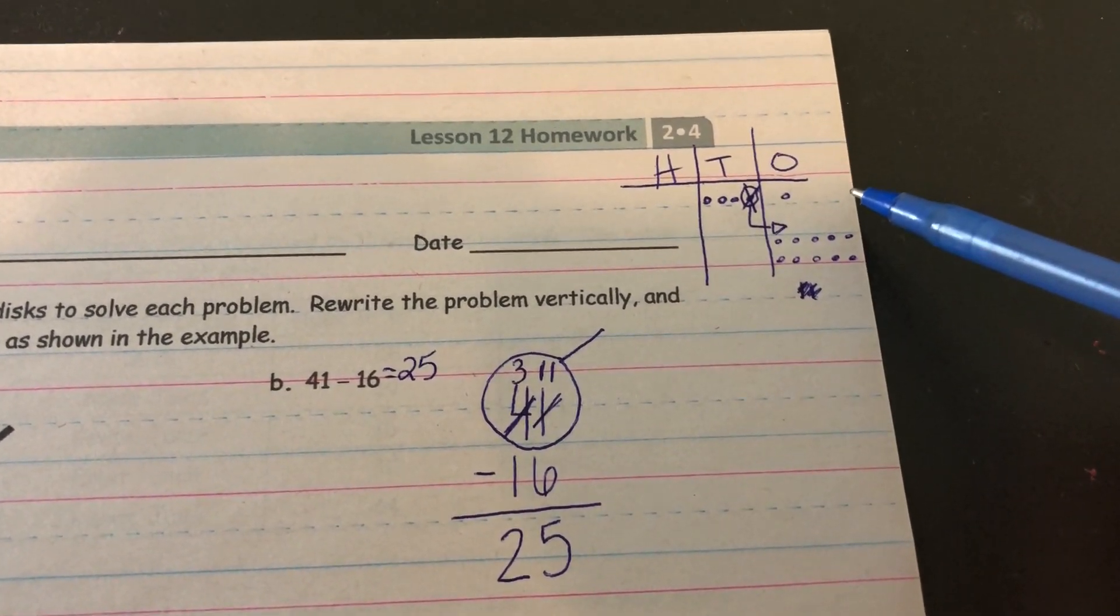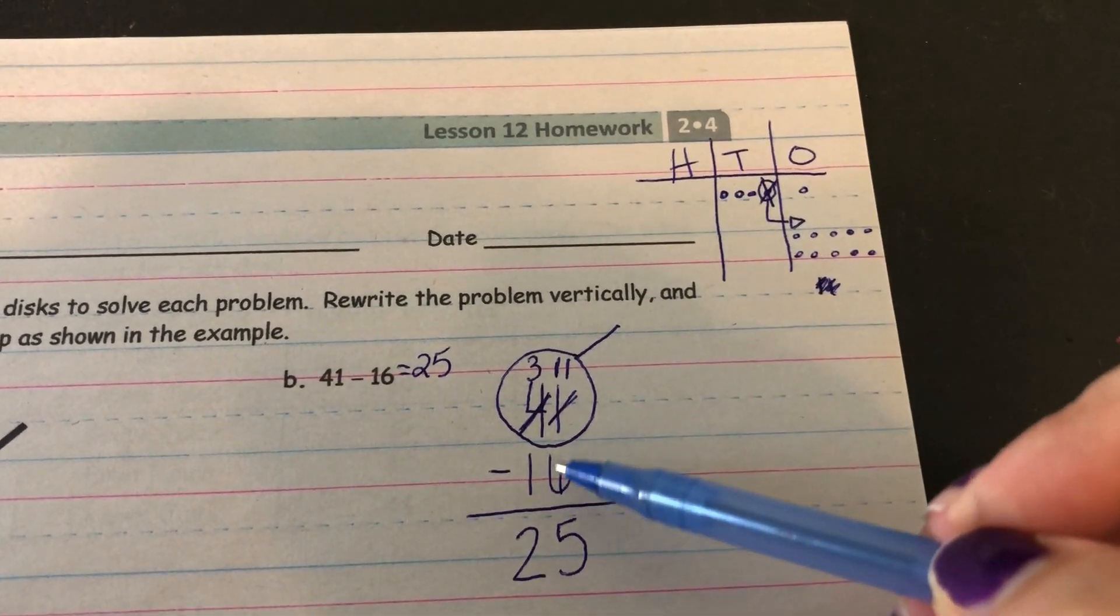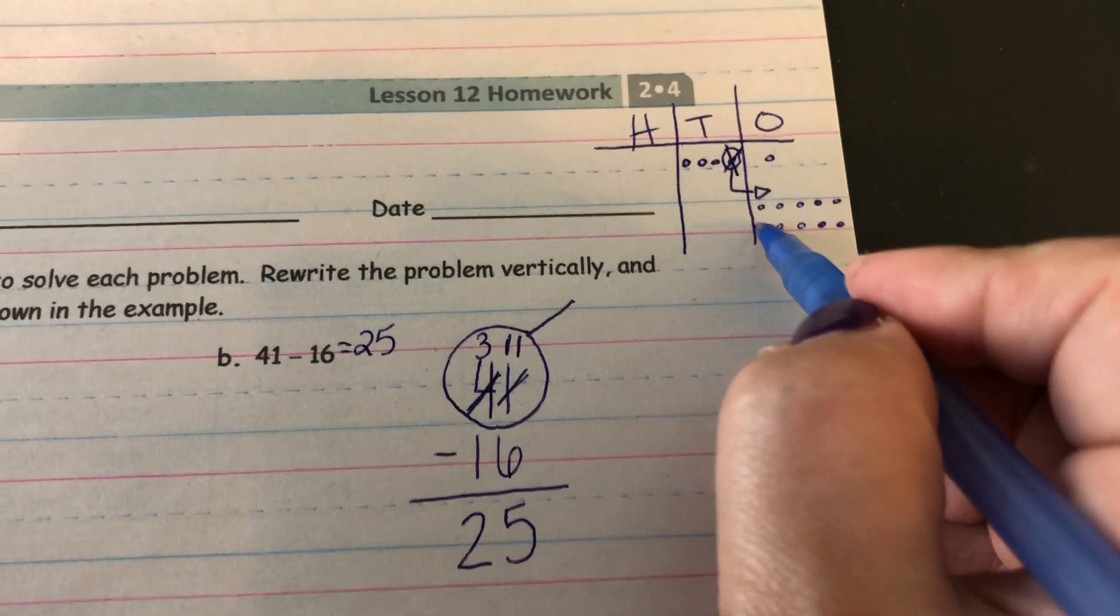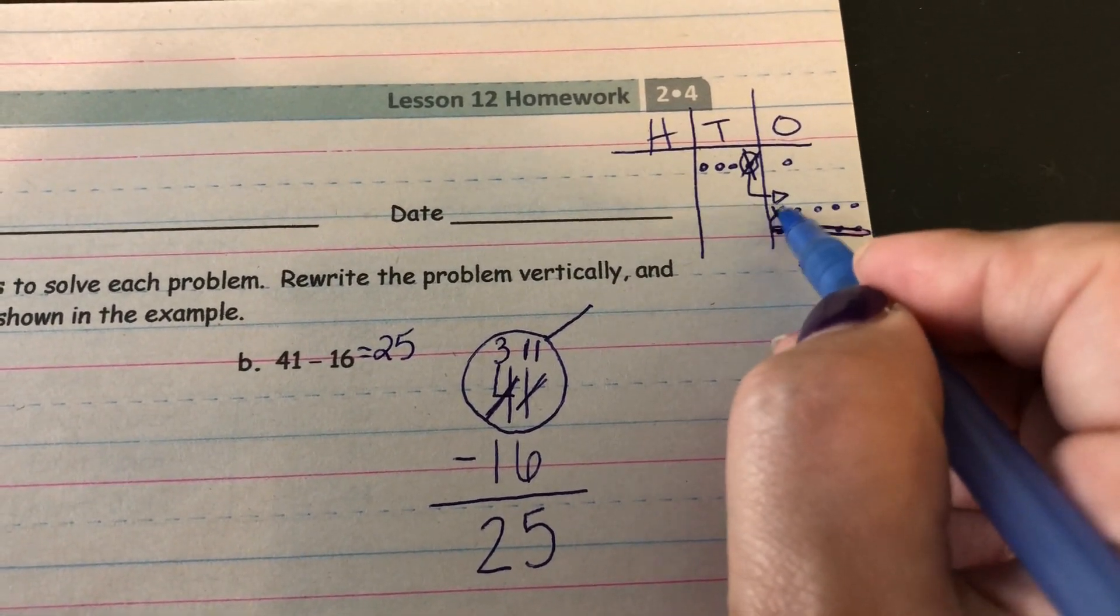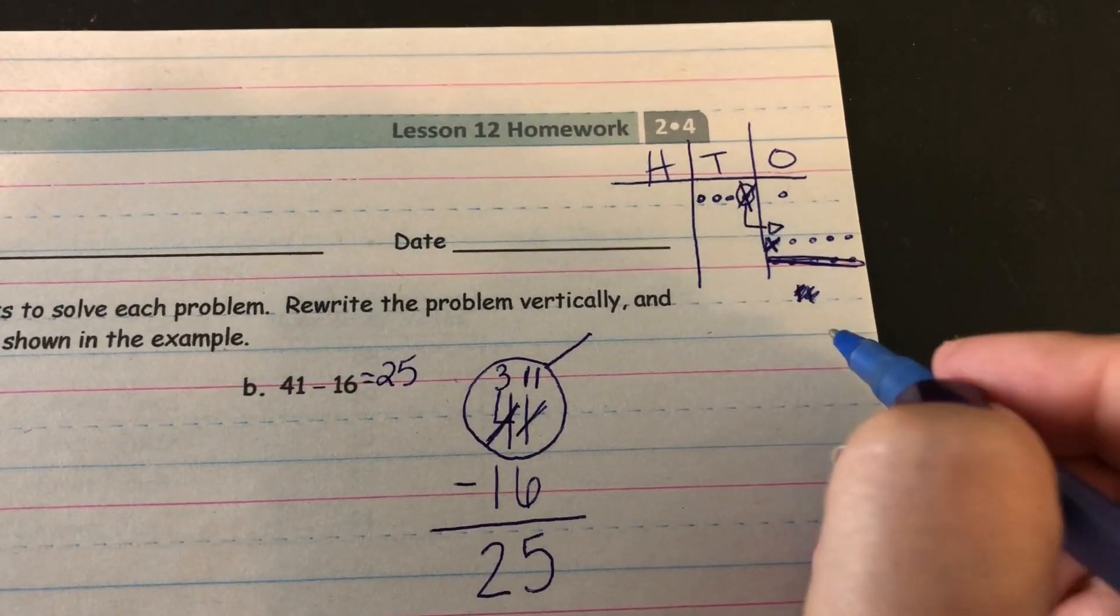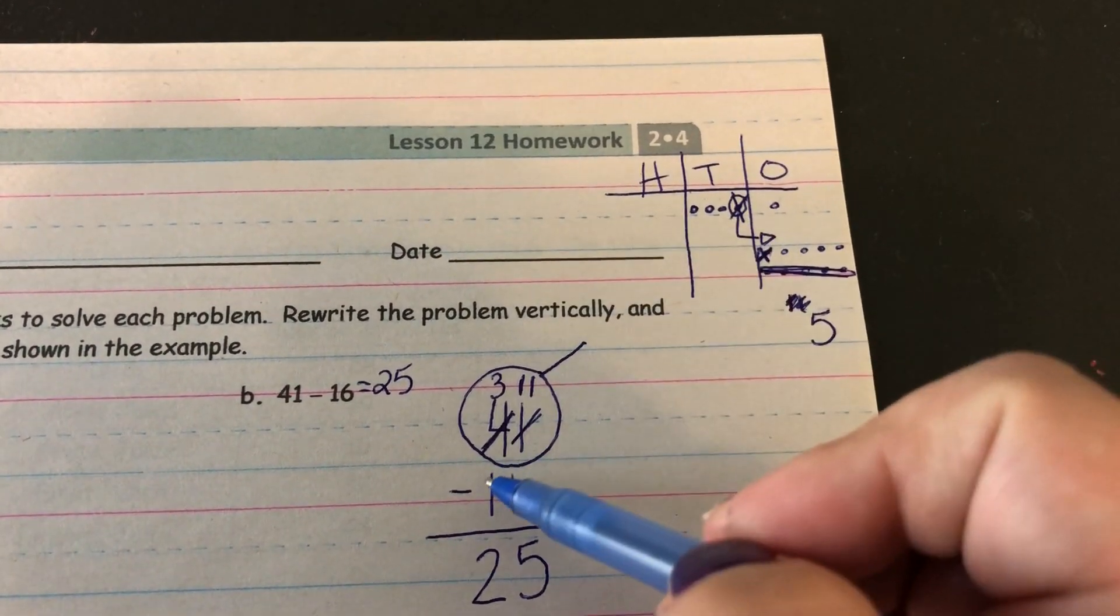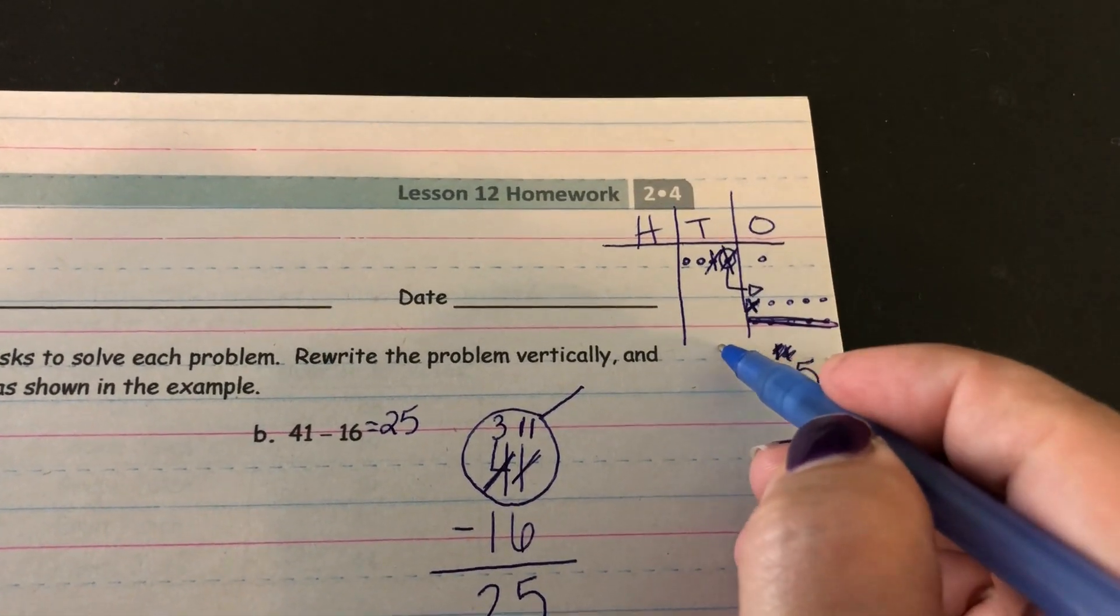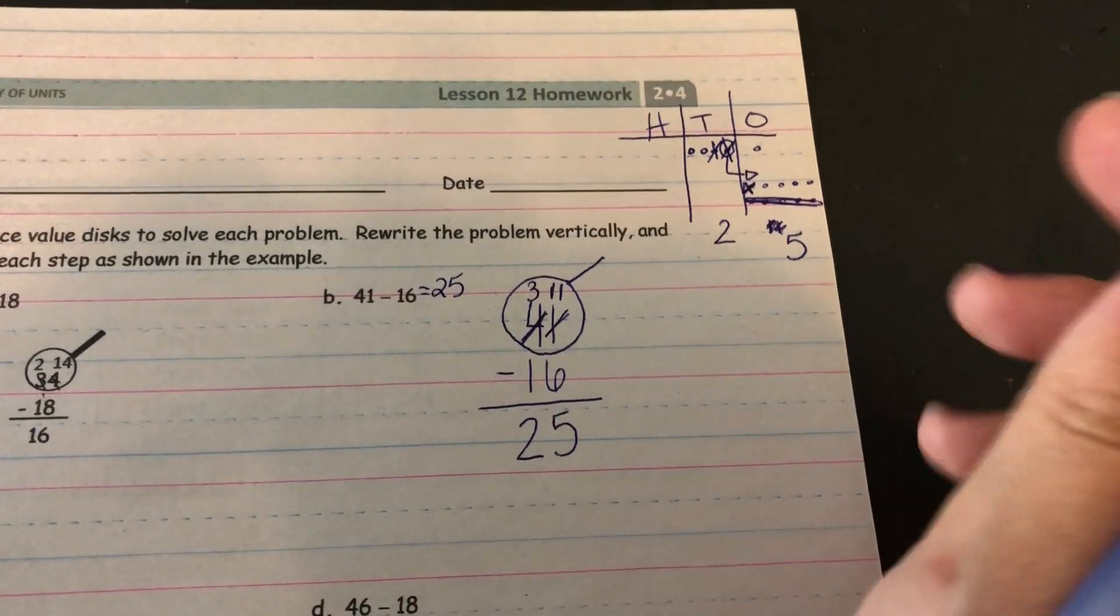Okay. Now I can do my subtraction. So now that I have 11 ones, can I take away six of them? Yes, I can. So I'm going to take away five, six. And that leaves me with one, two, three, four, five ones. And now I need to take away one 10. And that leaves me with two 10s. So I get 25 either way I answer it.